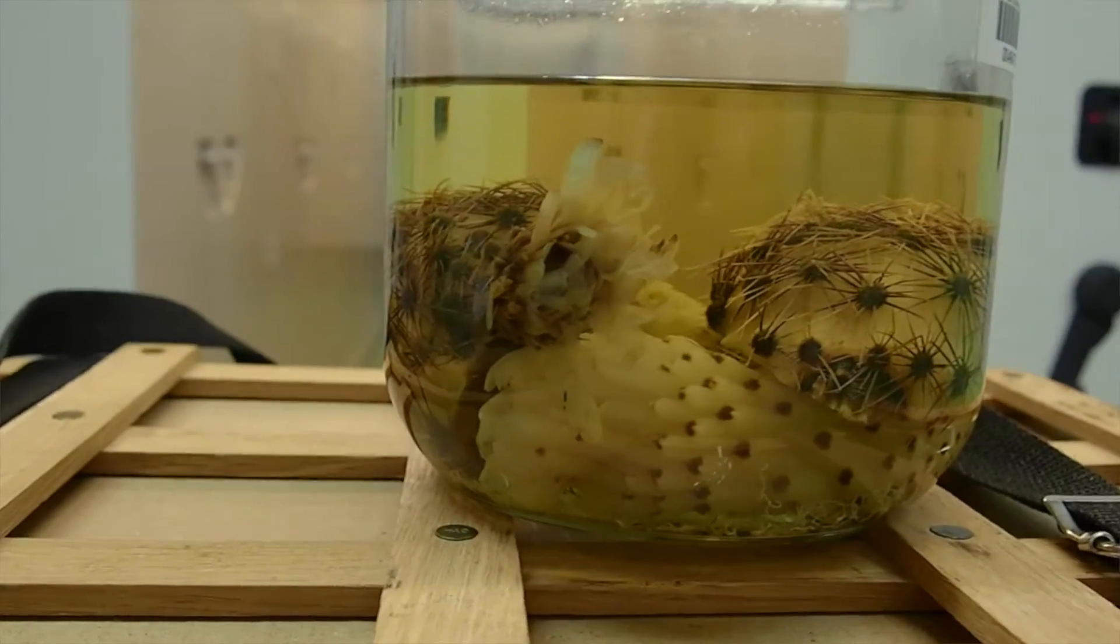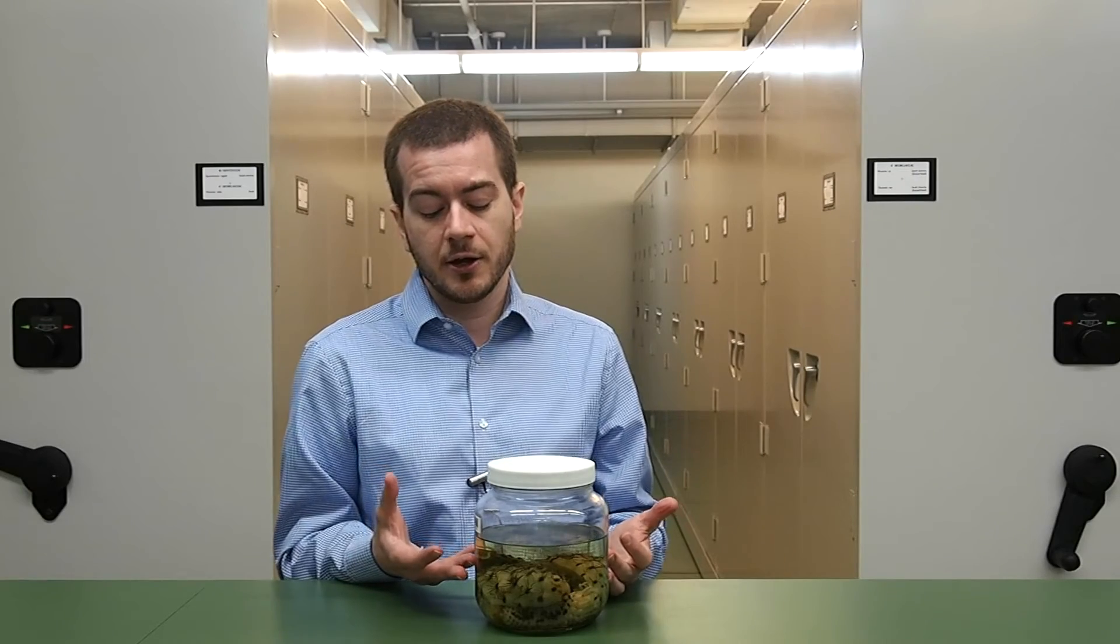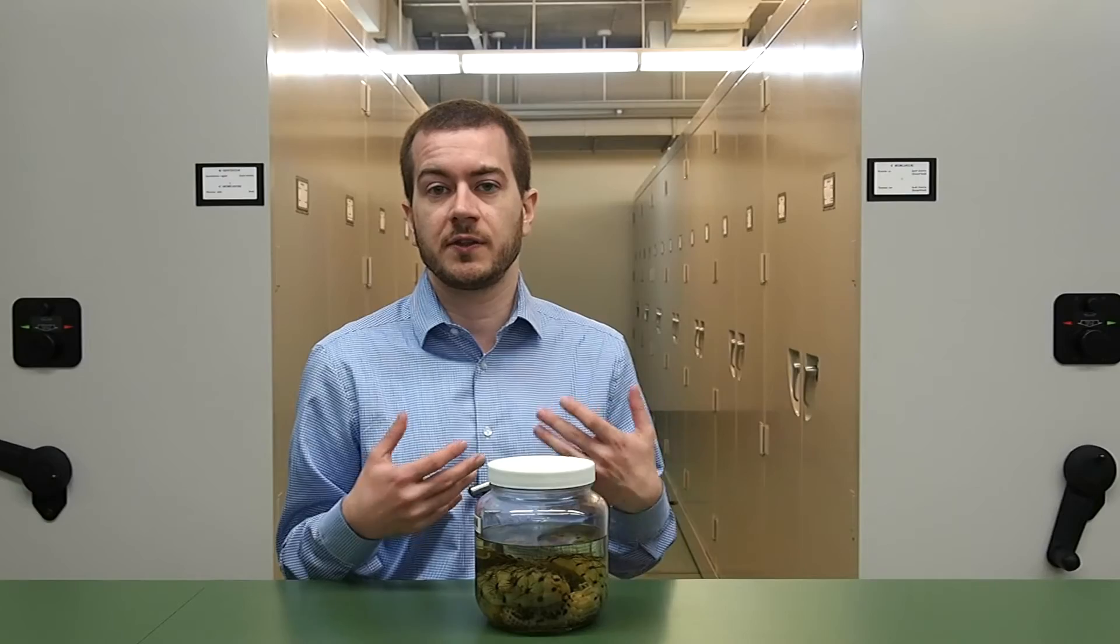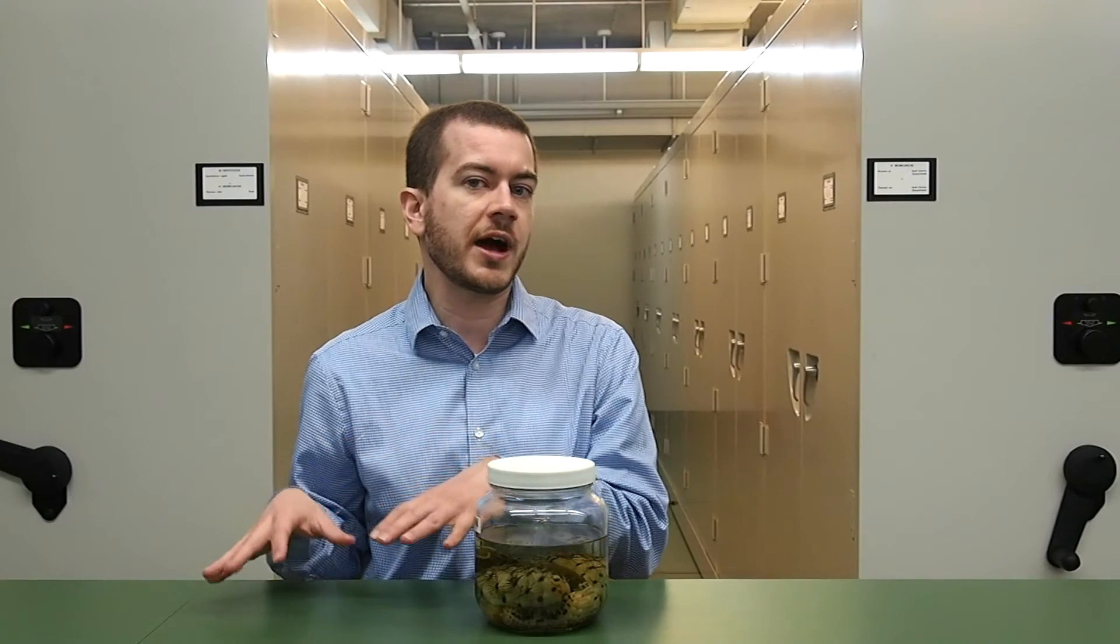Actually they cut the fruit open to allow researchers to look at the seeds inside. This not only preserves the three-dimensional shape of this particular plant, but it also allows someone to look at the cells of this plant, look at the vascular system of the plant if they want, which for cactus you often lose when you dry it and press it.